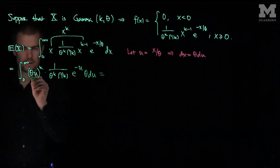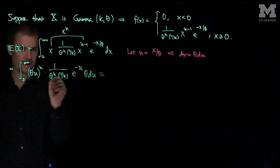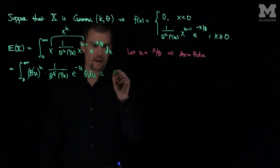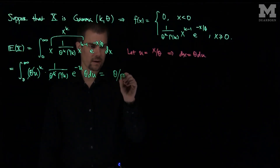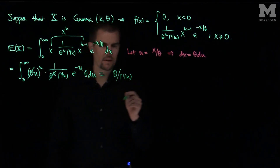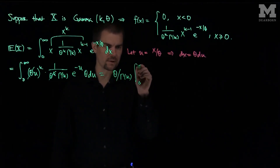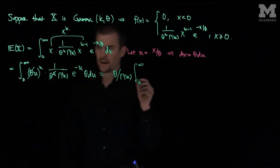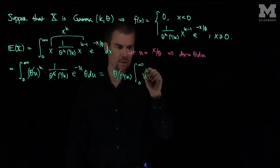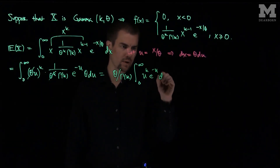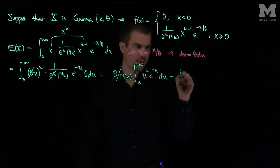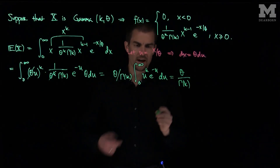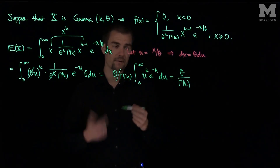What will happen is this theta to the k will cancel with that theta to the k, and I'll have theta over gamma(k). Then pulling out gamma(k) and the extra theta, I'll have u to the power k, e to the negative u du. So this becomes theta over gamma(k), and then this integral from zero to infinity is exactly gamma(k+1).